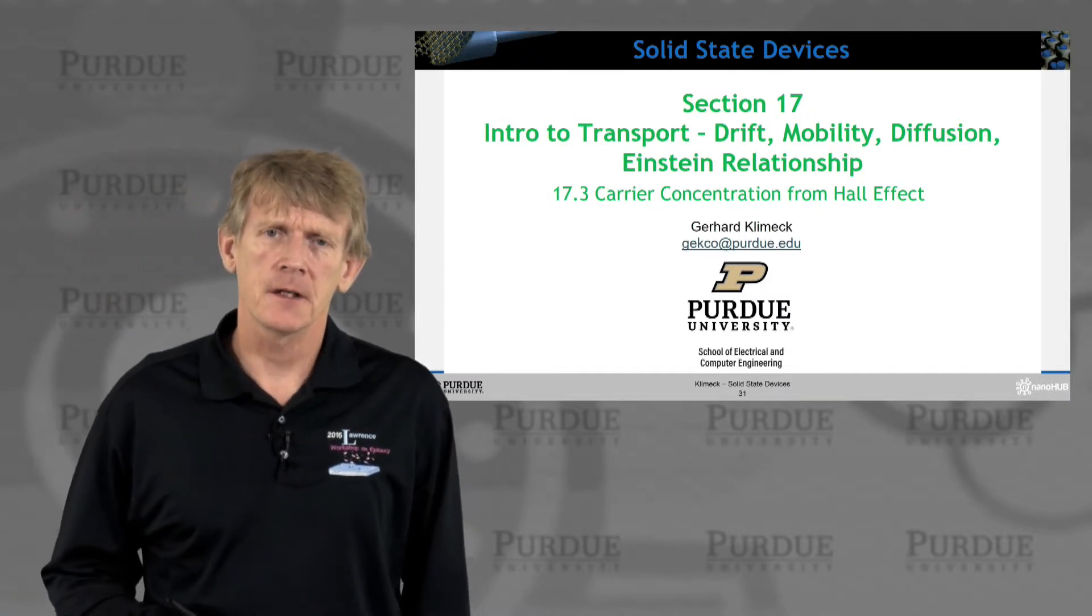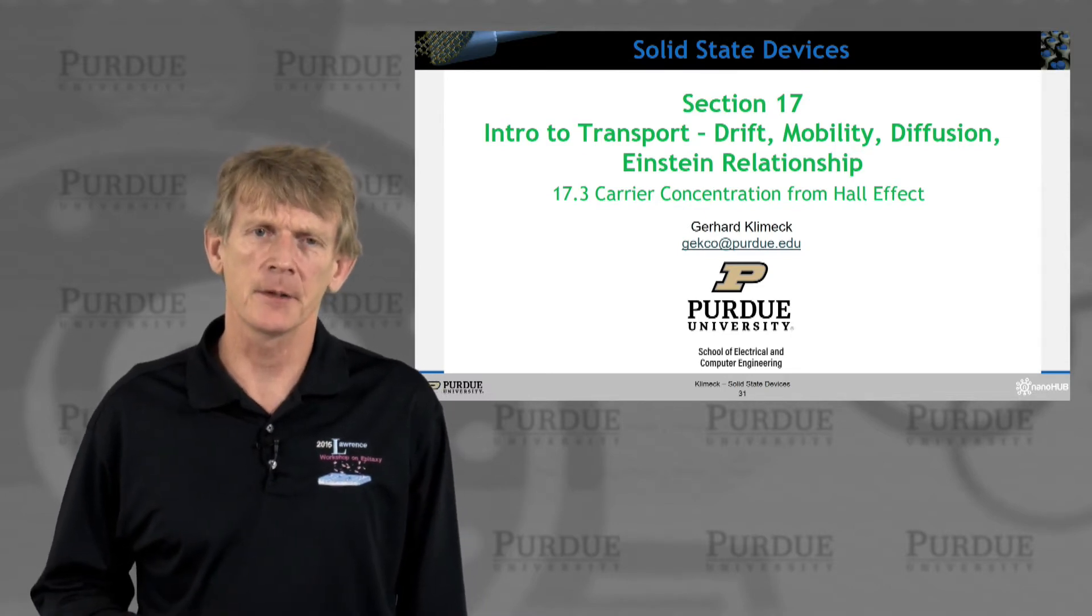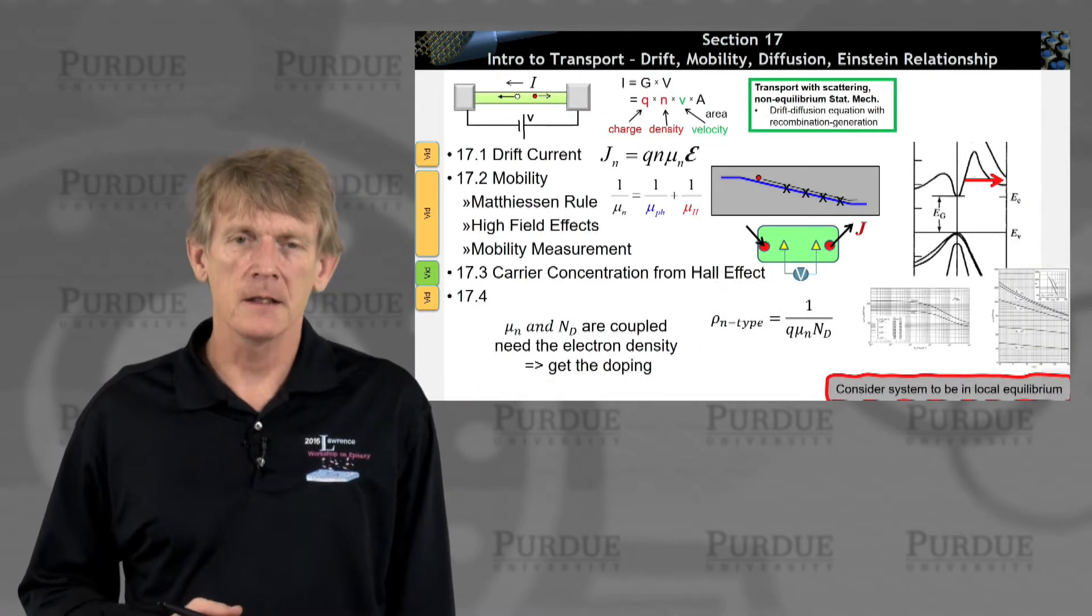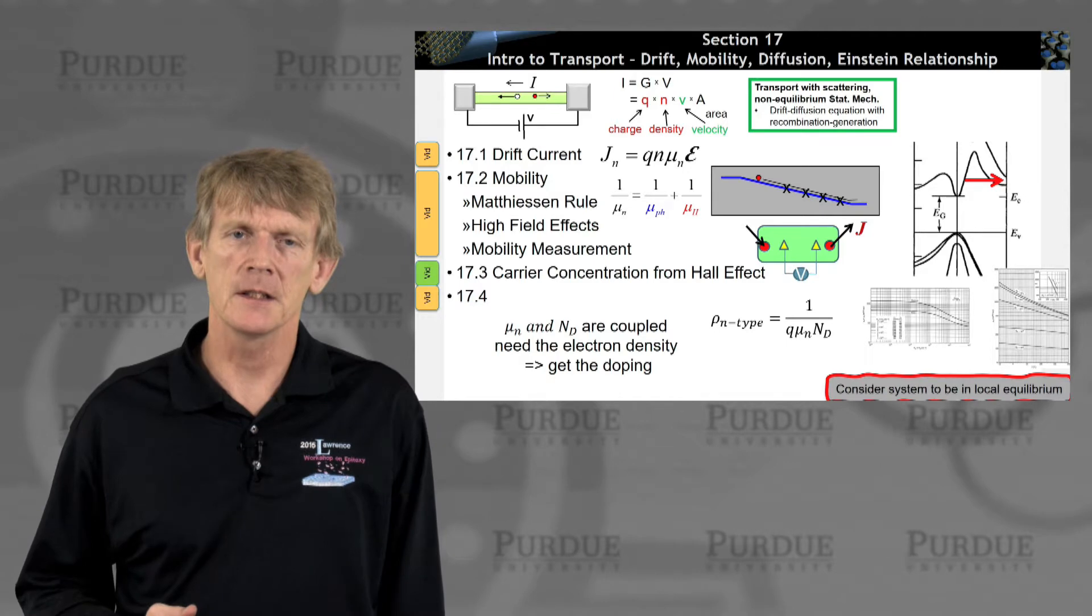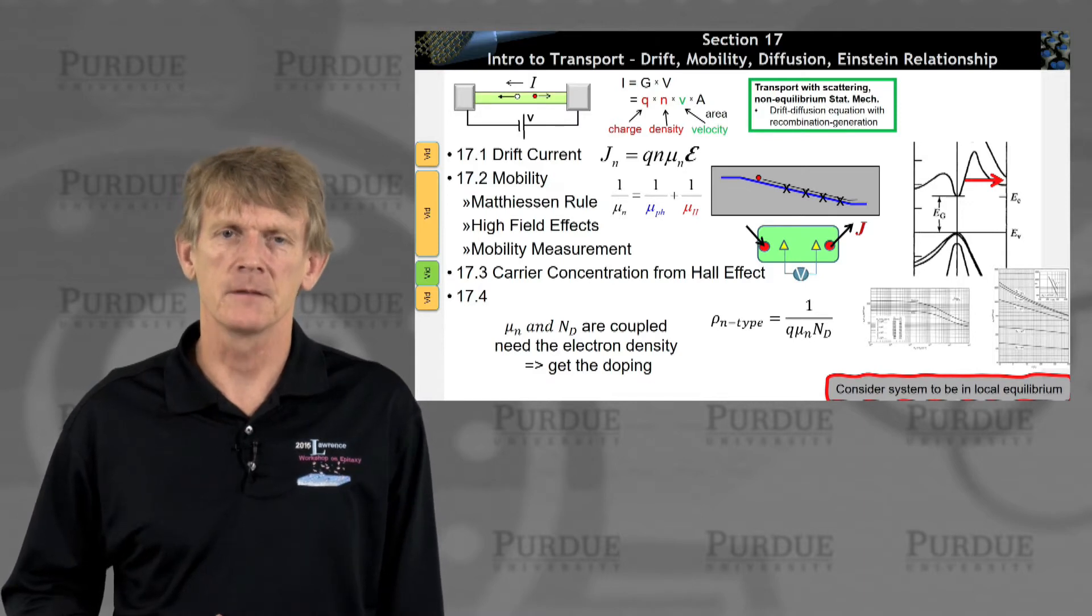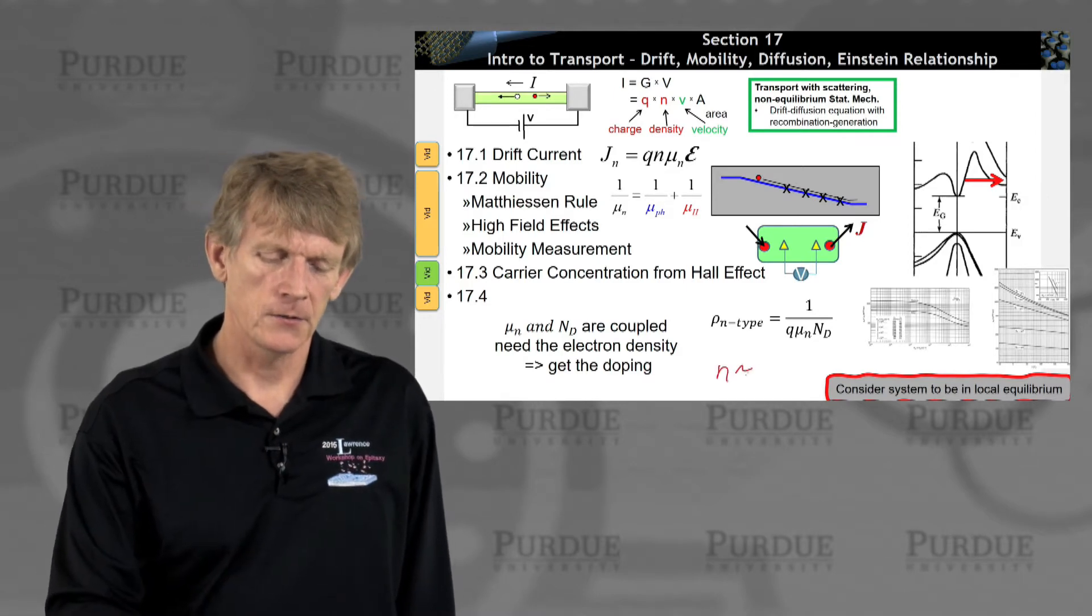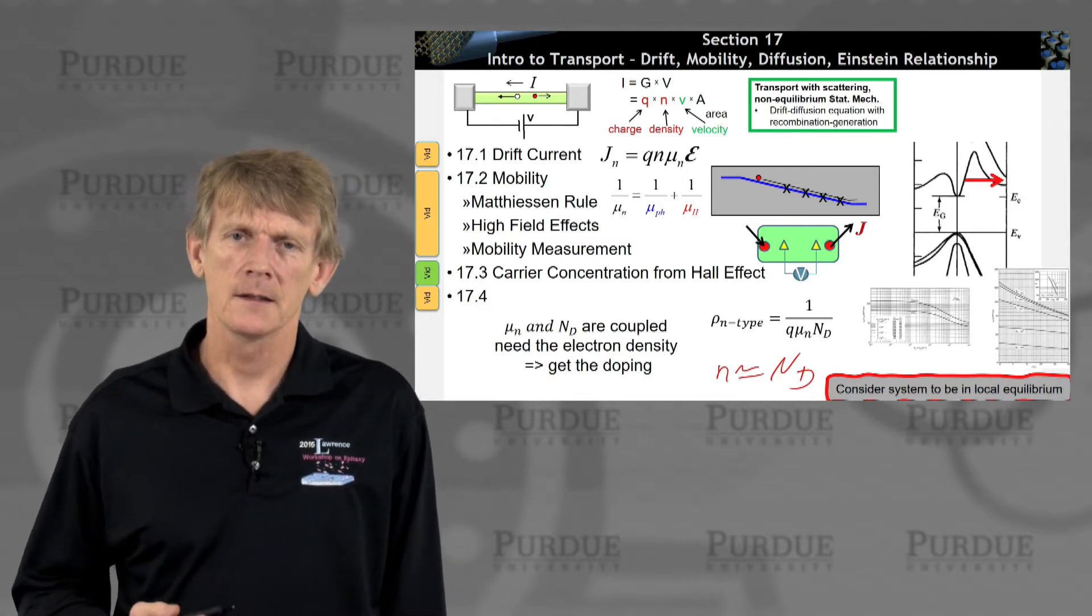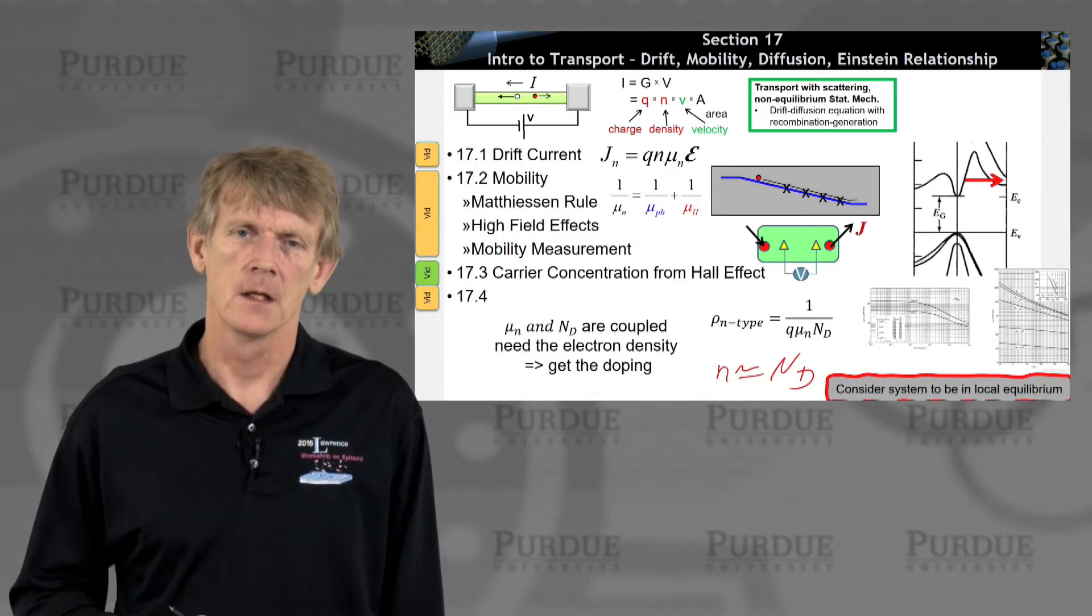All right, so let's figure out some interesting way on how to obtain the carrier concentration. This is done typically with a Hall experiment from the Hall effect. That is the outline here that we followed in this section. We had a relationship derived from mobility to doping, and said the doping has a strong effect on the mobility, so does temperature. But we haven't really shown a way, when we say N is roughly ND, on how to calculate the electron density or the doping that is related to it.